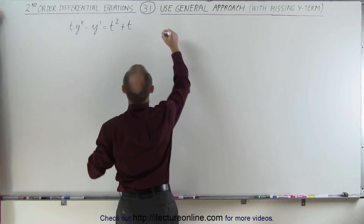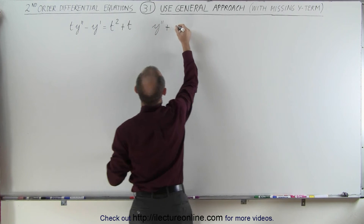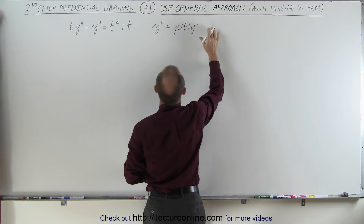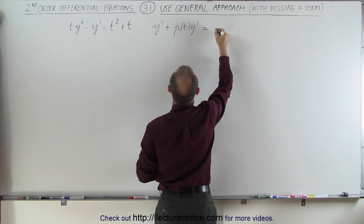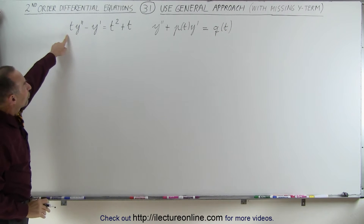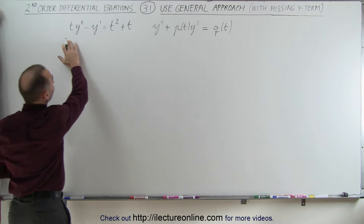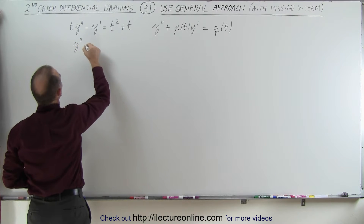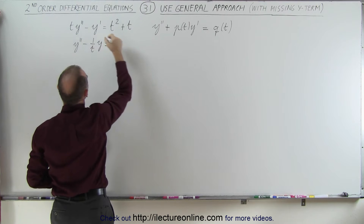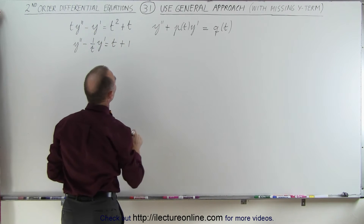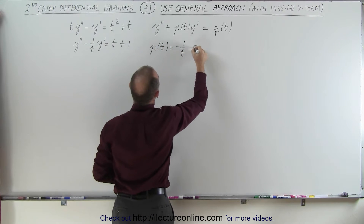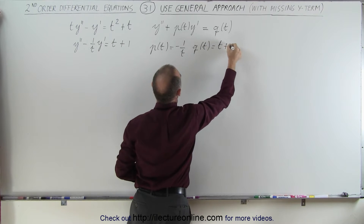The general format looks as follows: Y double prime plus P of T times Y prime — the Y is missing — set equal to Q of T. To put our equation into that format, we divide everything by T, giving us Y double prime minus 1 over T times Y prime equals T plus 1. So P of T equals negative 1 over T, and Q of T equals T plus 1.